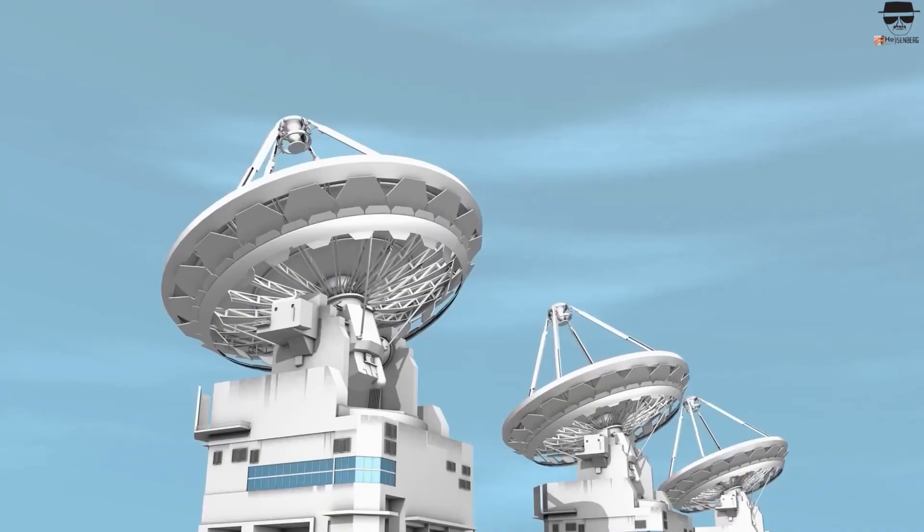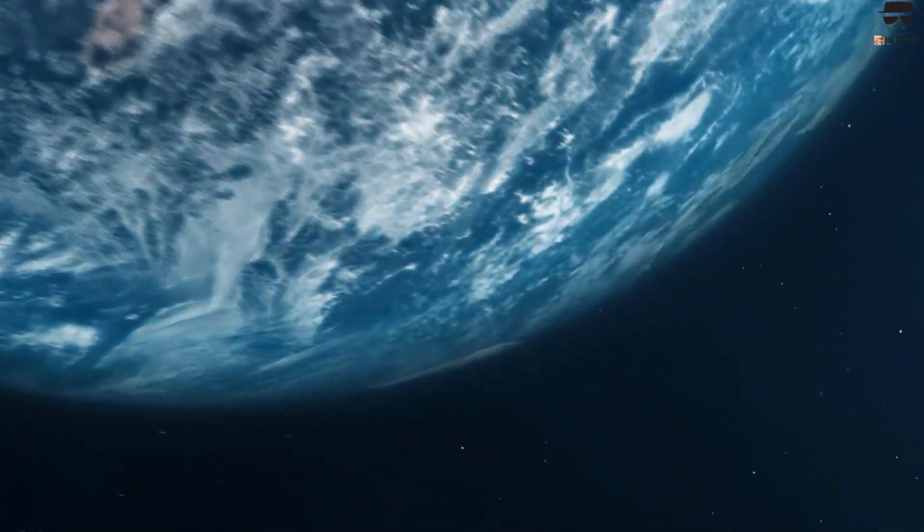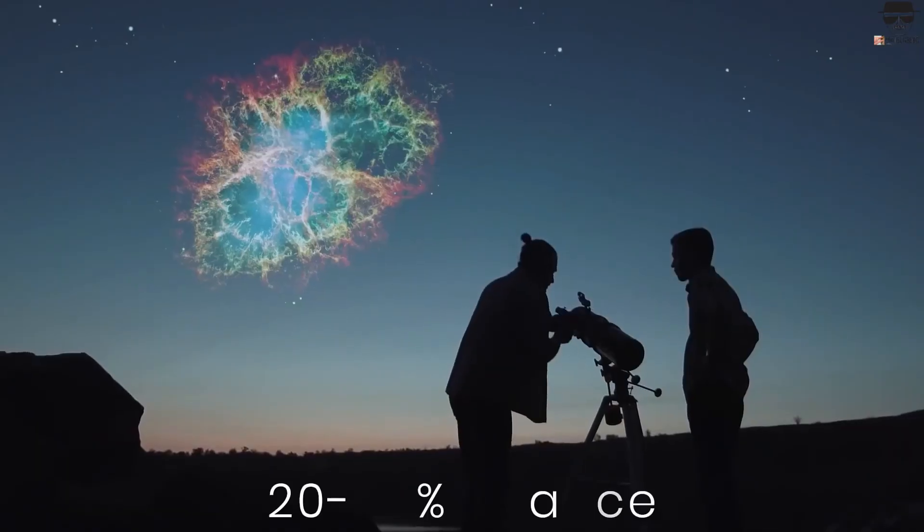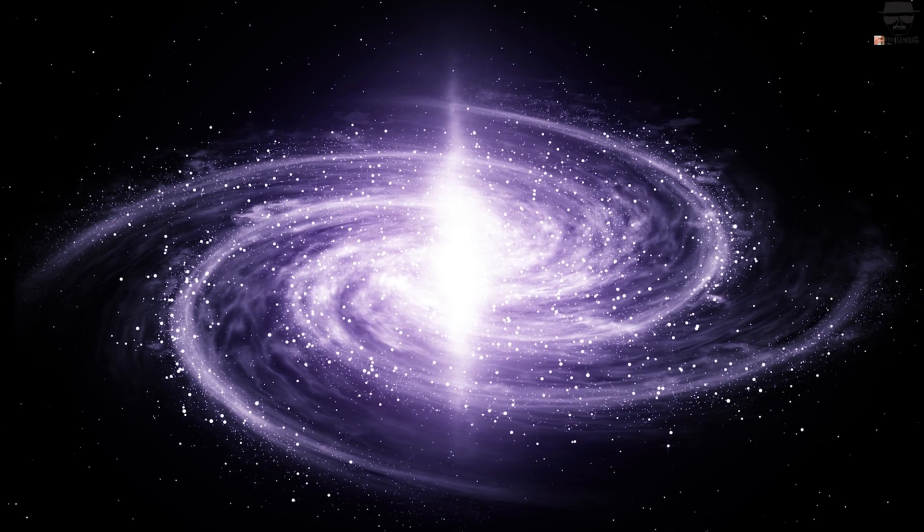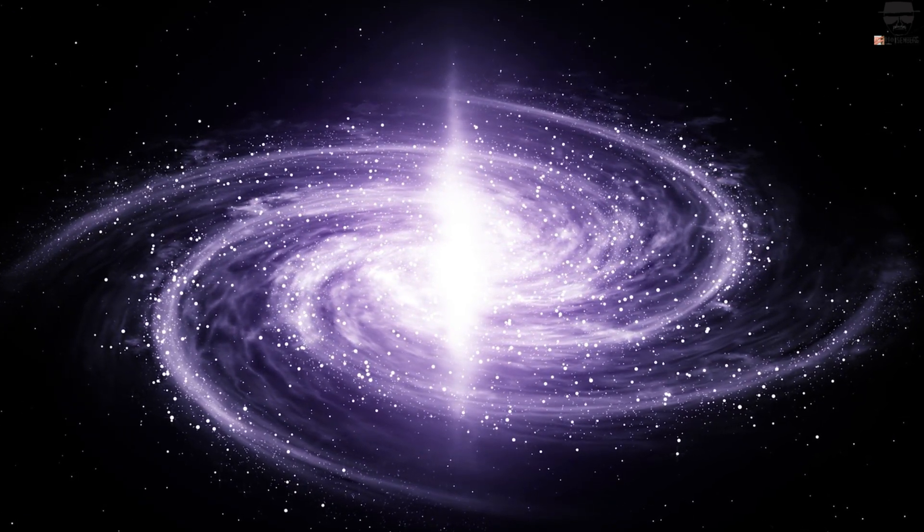There are probably between 20 and 30 supernovae in the Milky Way within a millennium, six of which could be observed consciously. Many supernovae are not visible from Earth because parts of the Milky Way cannot be detected by telescopes due to the spiral shape of the galaxy.